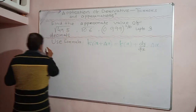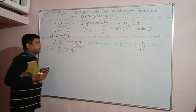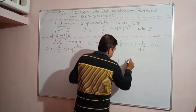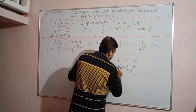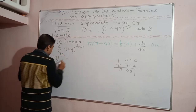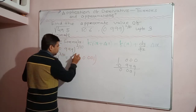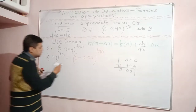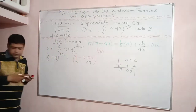The third question is (0.999)^(1/10). The nearest perfect value is 1. We write 0.999 = 1 − 0.001, so (0.999)^(1/10) = (1 − 0.001)^(1/10). Here x = 1 and Δx = −0.001.